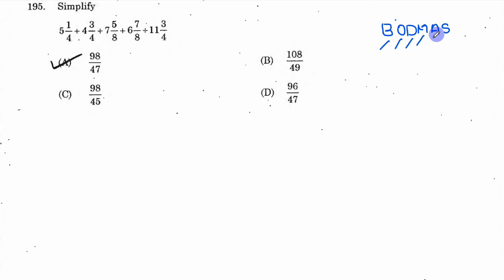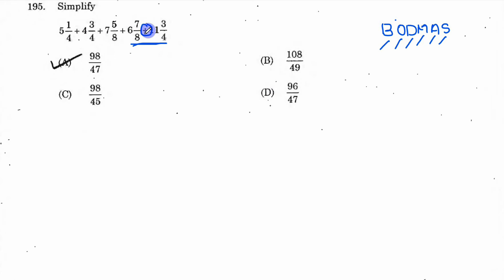If you look at this part, we have division and the bracket is in addition. Now, let's add the sum of the bracket. If you solve the question, it will be 98 divided by 47.